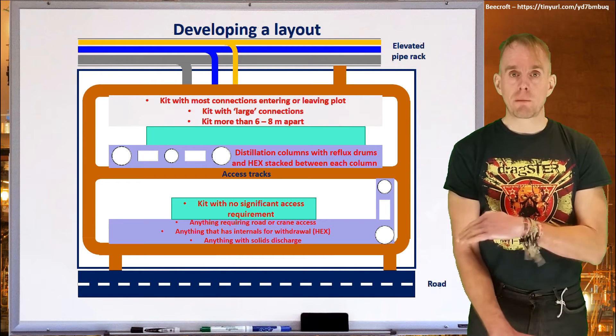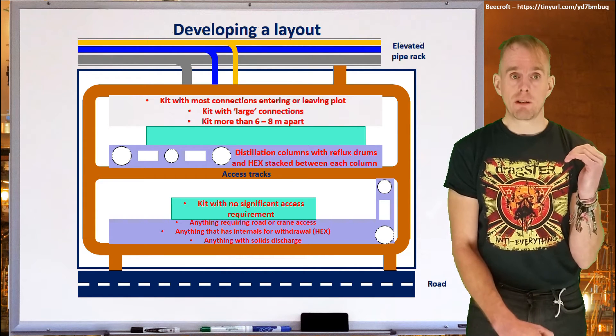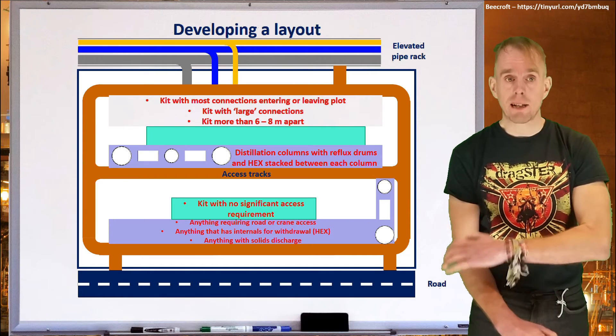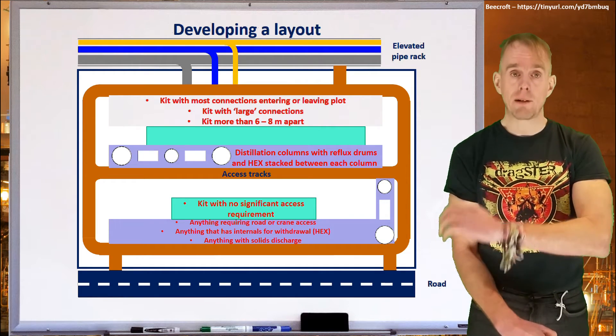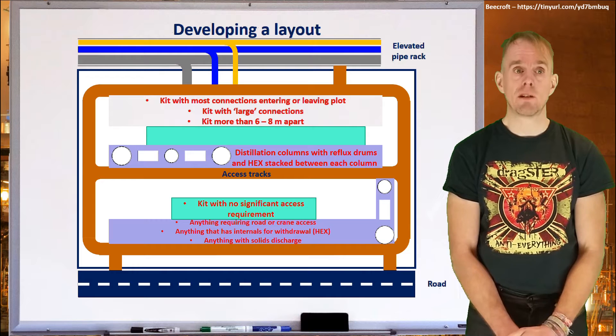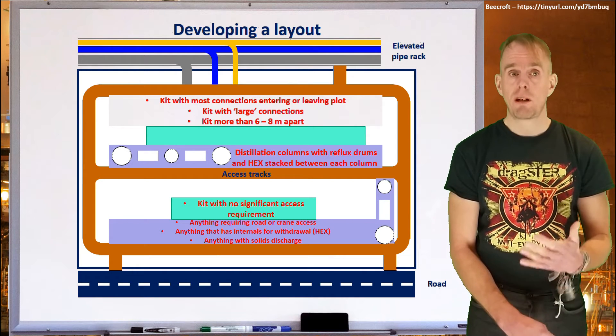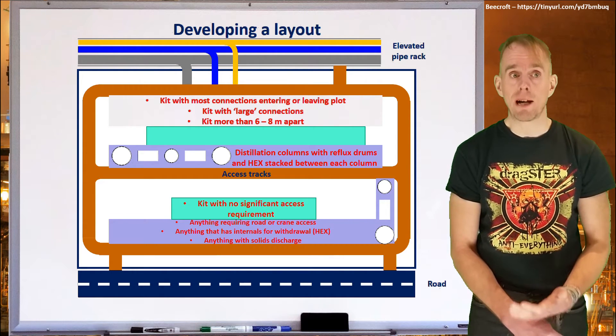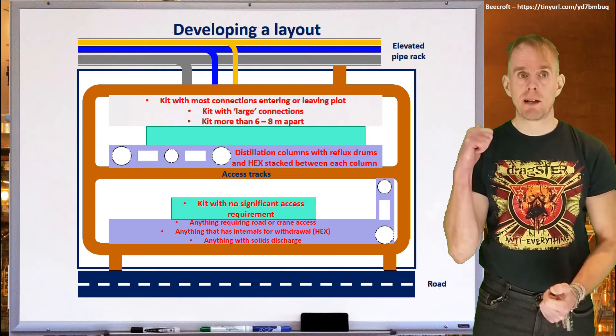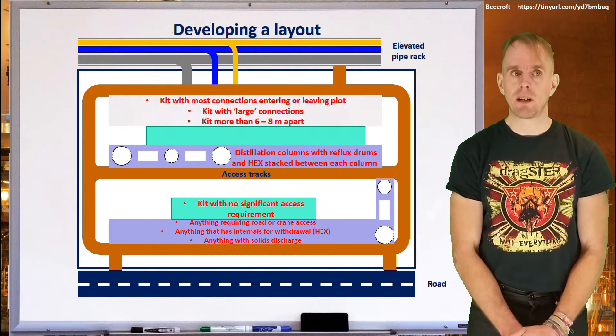Also, distillation columns are sometimes cantilevered up into position, and so you need to have sufficient lay-down space to start with to allow them to be cantilevered into position. So they need good access. Place them in places where they do have good access. On this diagram, the circles are meant to represent distillation columns.